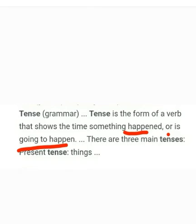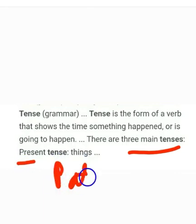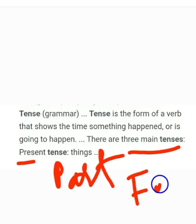In English, tense is nothing but the form of the word that shows the time something happened or is going to happen. There are three main tenses. How many tenses are there? Three main tenses: present, past, and future.